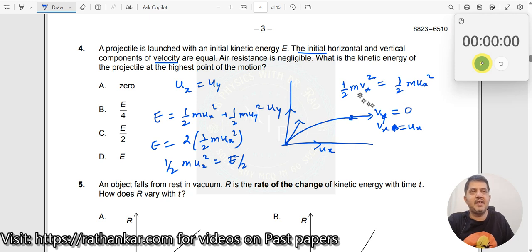So this should now be equal to ½mux². Why? Because the velocity along the horizontal x-axis does not change. And therefore, now what is this according to it? This is equal to e by 2. So this answer should be equal to e by 2. The answer here is answer C.